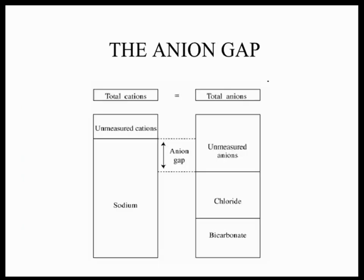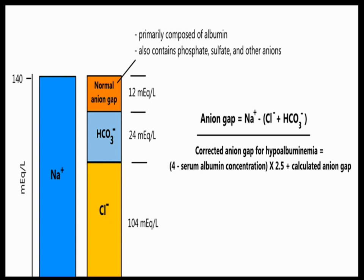By the law of electroneutrality, total cations equals total anions. In a clinical scenario, we have some amount of unmeasured cations and unmeasured anions. We routinely measure sodium and potassium as cations, and chloride and bicarbonate as anions. When we see the difference, there is always a gap — that is called the anion gap.